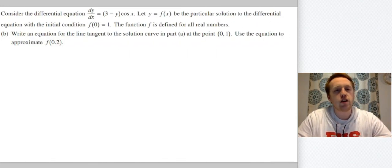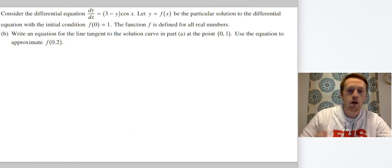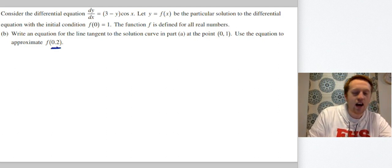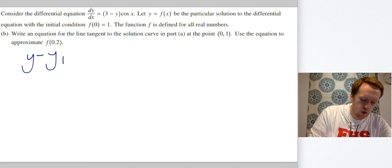All right. Part b, write an equation for the line tangent to the solution curve in part a at the point (0, 1). Use the equation to approximate f(0.2). So what I want to point out real quick, a lot of people make this mistake. This is not going in for your tangent line. It will in a second, but it's not right now. What we're going to do first, we need to do a tangent line. That's y - y1 = m(x - x1).